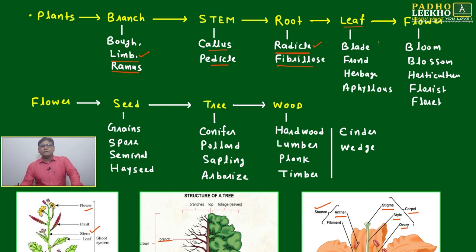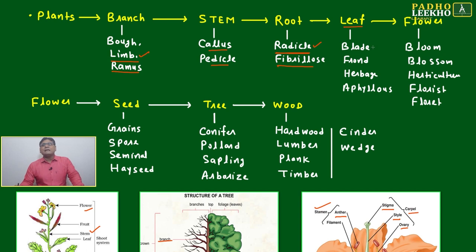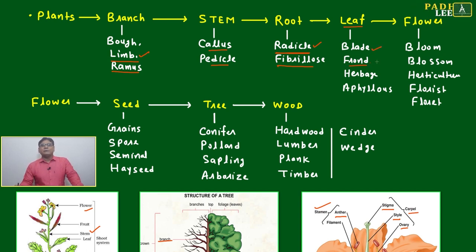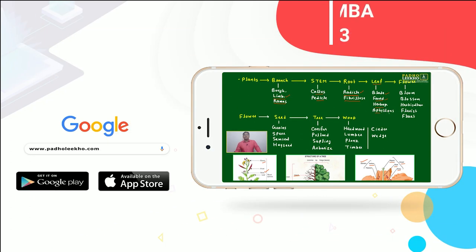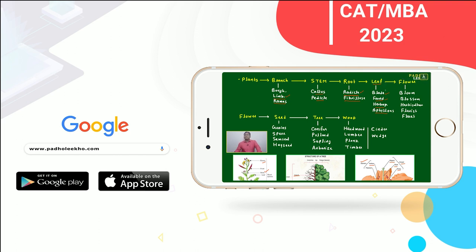Next is 'leaf.' Leaves may vary in shape or hardness. Alternative names include 'blade,' 'frond,' 'herbaceous,' and 'aphyllous' — aphyllous is a more botanical term, but blade and frond are names we can easily reconnect to leaves.